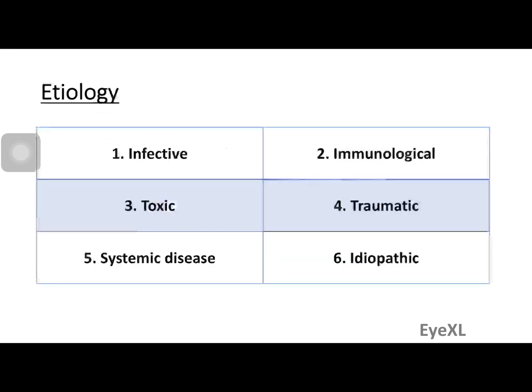One of the most difficult things in uveitis is not the treatment — it is deciding what is causing it. The etiology of uveitis encompasses six different theories: infective, immunological, toxic, traumatic, associations with systemic diseases, and idiopathic when no cause is found.